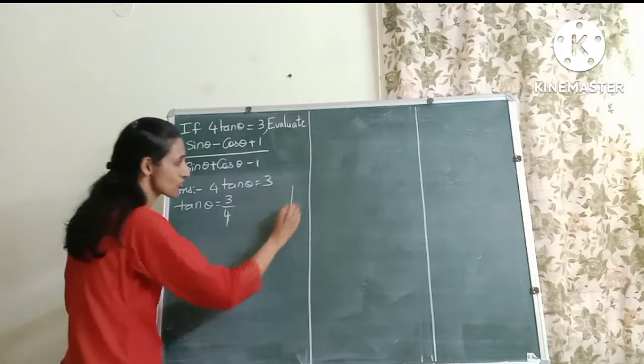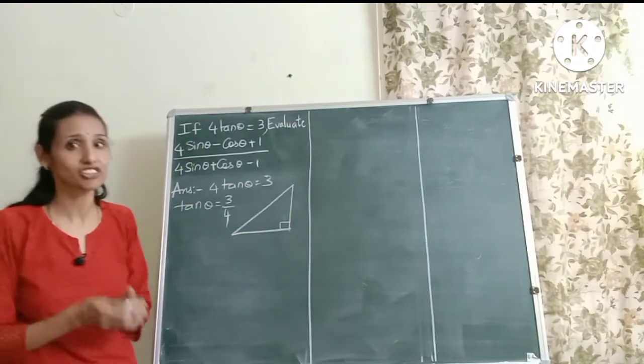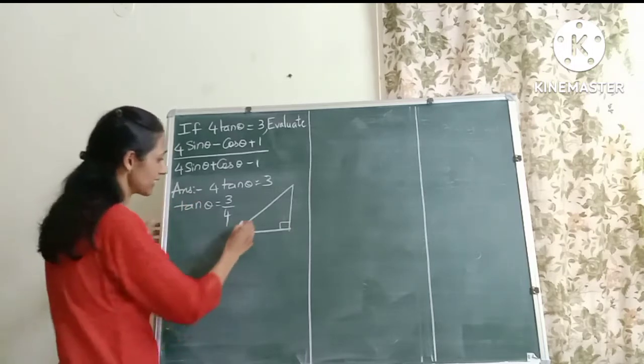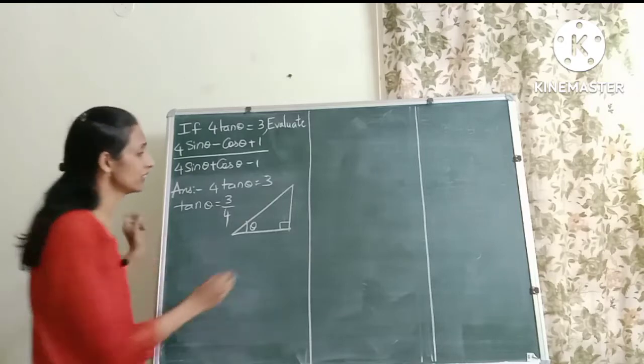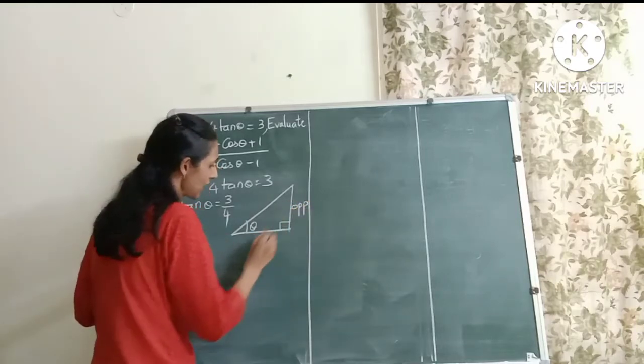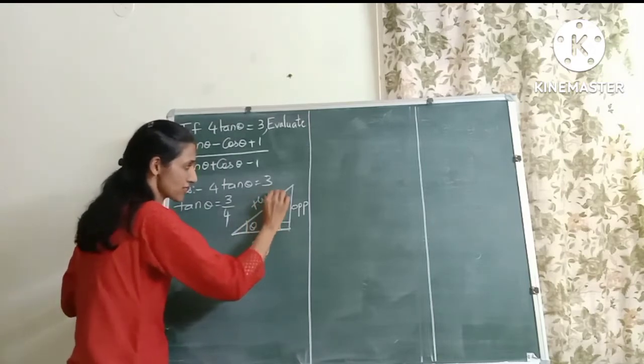So friends, let's first draw a right angle triangle. After all, trigonometry is about right angle triangles. Now one of the angles, let's take it as θ. Now what is the opposite side for this angle θ? Yes, this is the opposite side and this will be the adjacent side. And what is the hypotenuse? Yes, this is the hypotenuse.